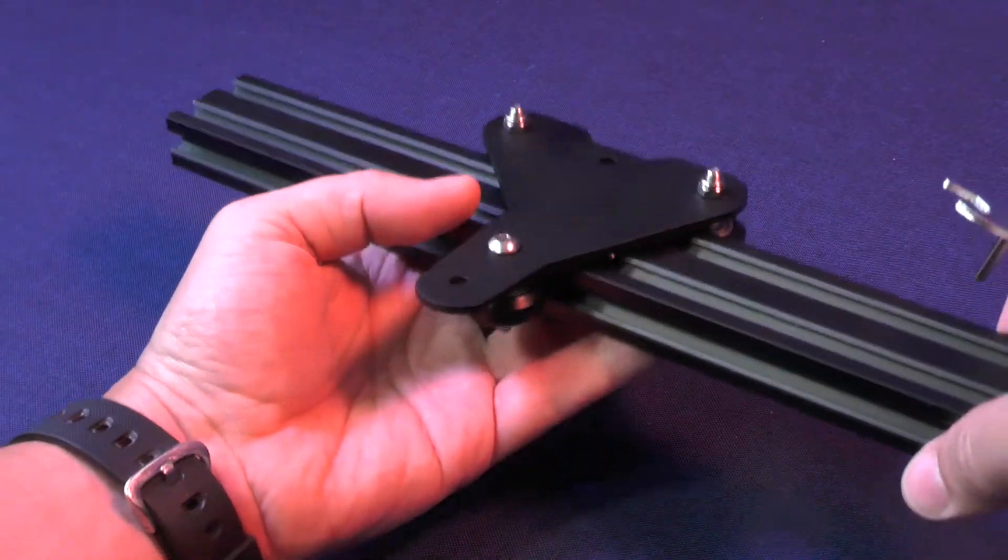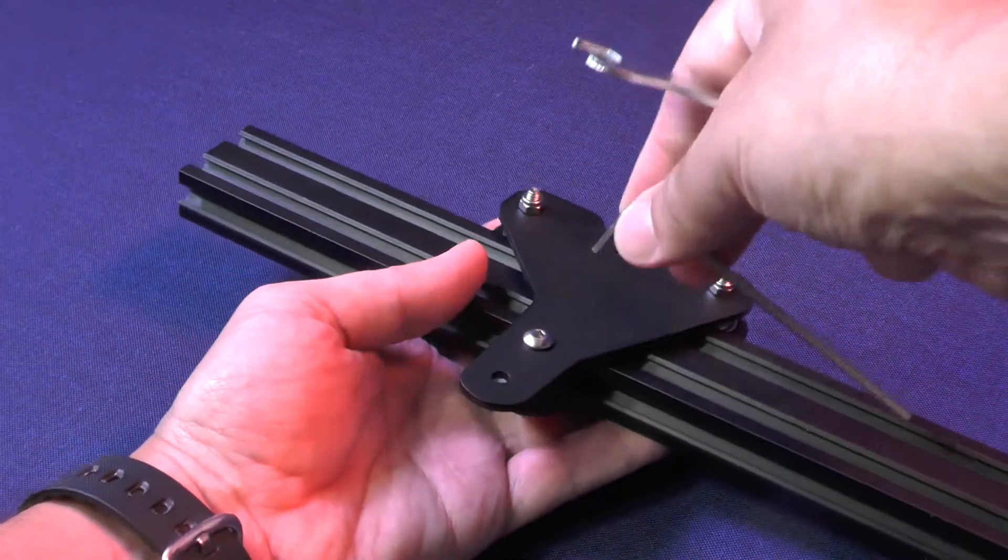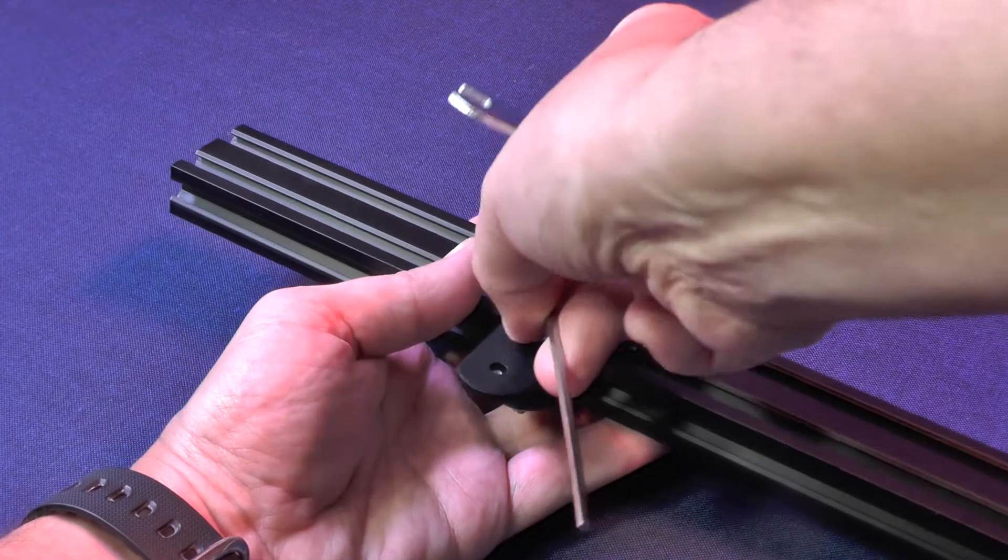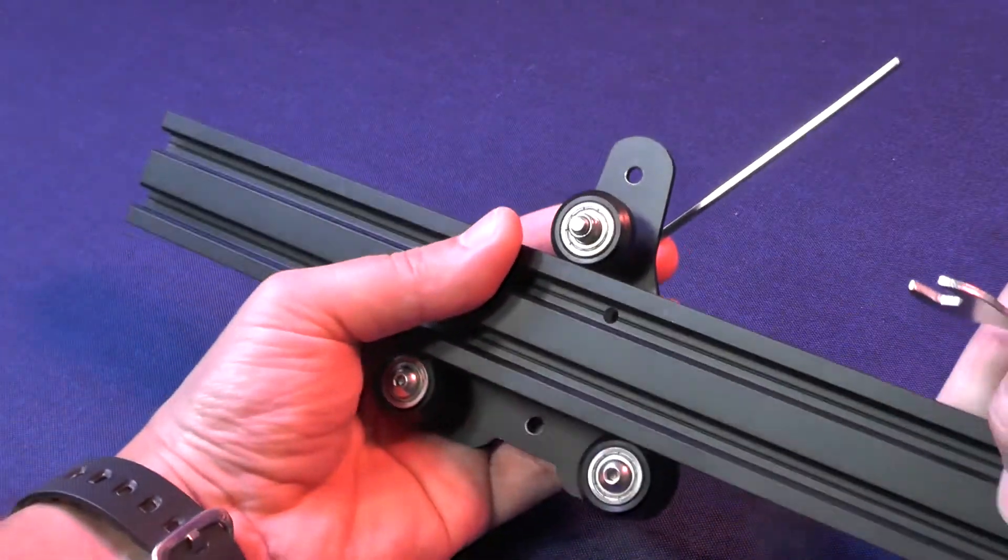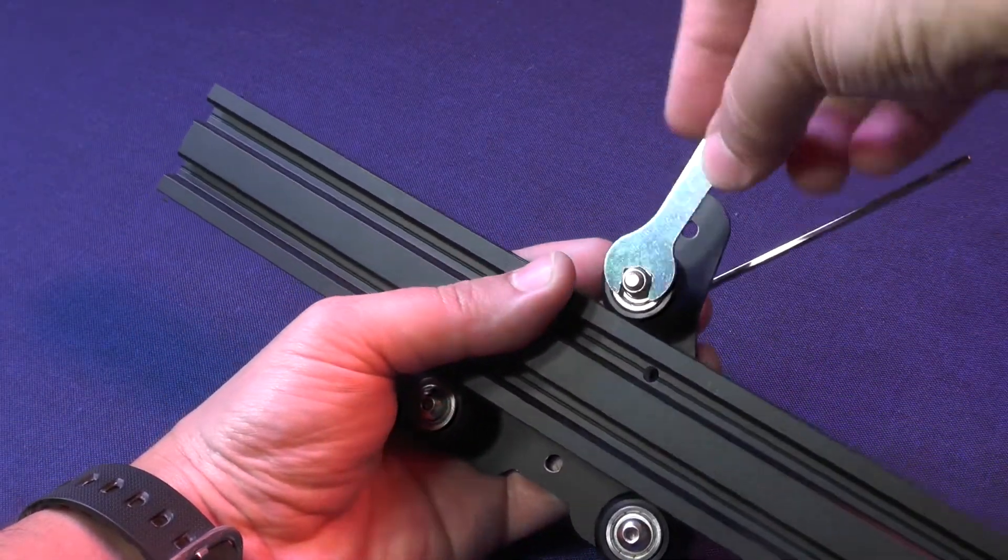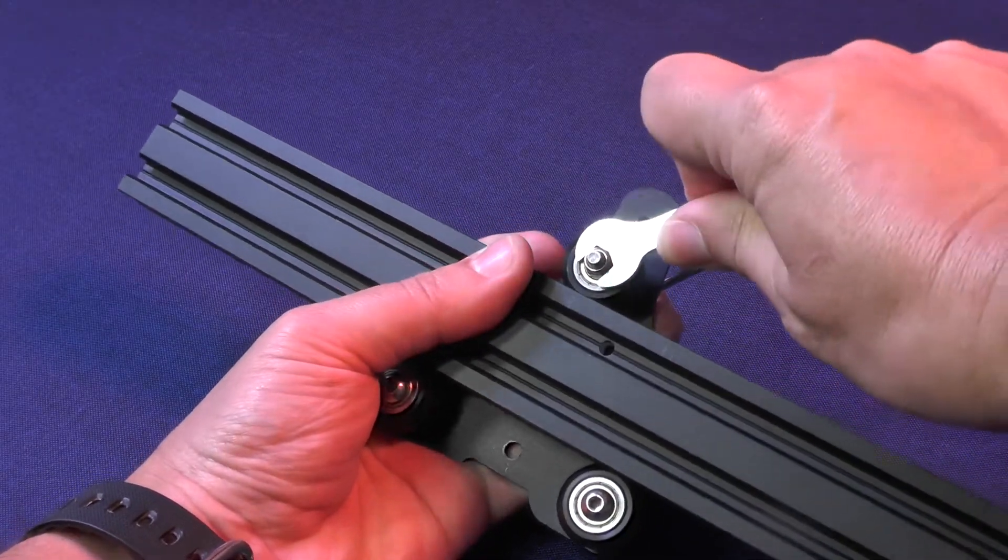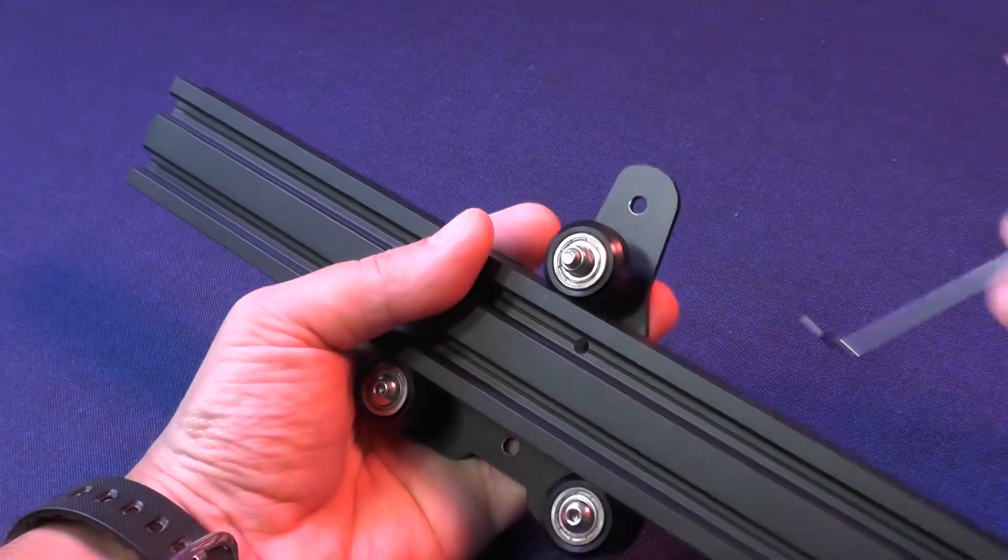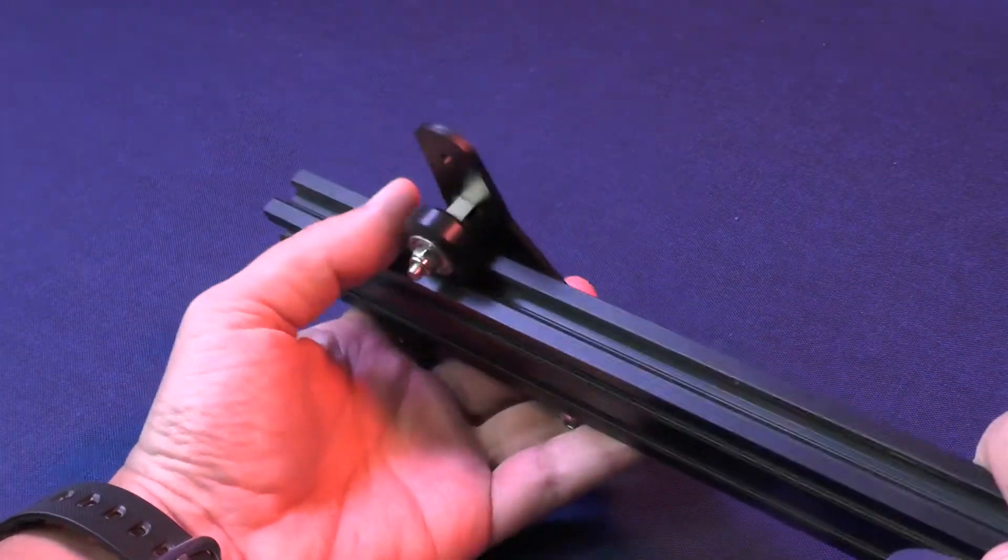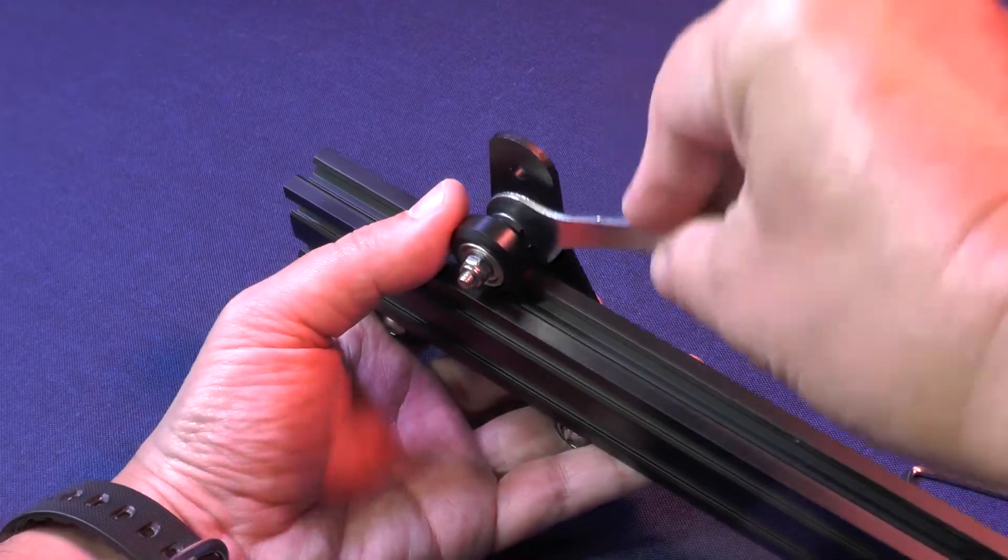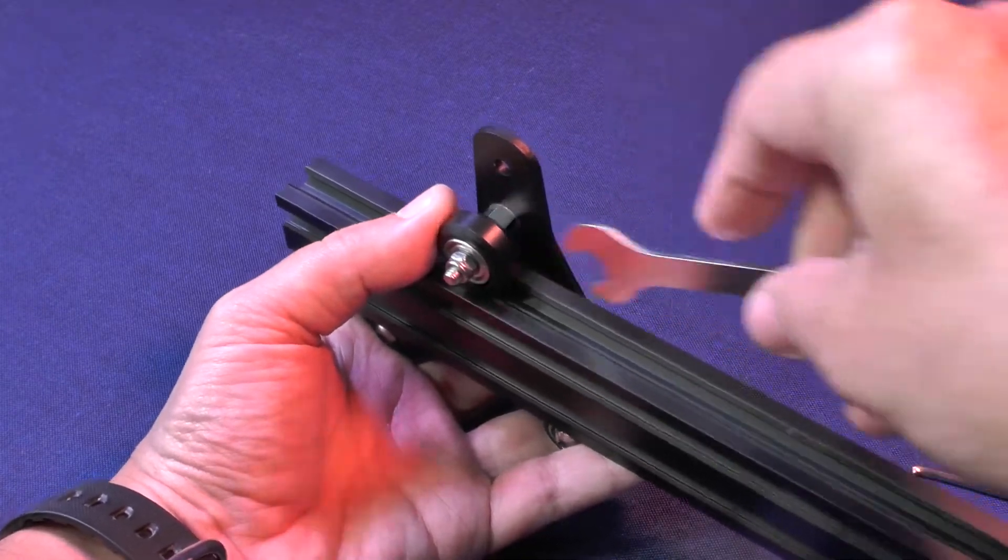And once you have done the adjustment of the eccentric nut, you would want to secure this adjustment in place. And you can do so by tightening the screw where the eccentric nut is located. After tightening this screw, your eccentric nut adjustment will remain firmly in place.